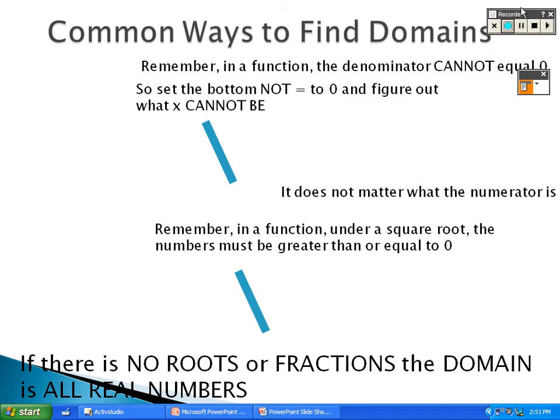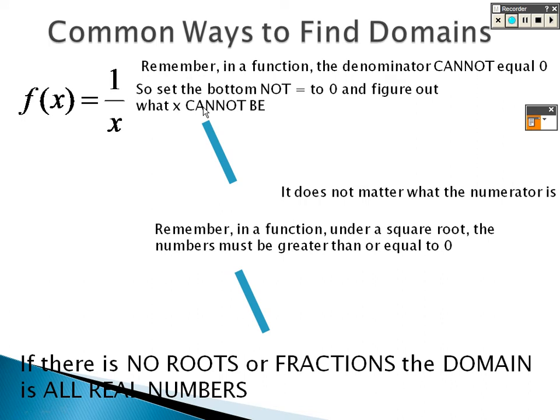Some things to remember before we start doing some problems here: the denominator cannot equal 0 in a problem. So in this situation right here, 1 over X, it can't equal 0 down here.